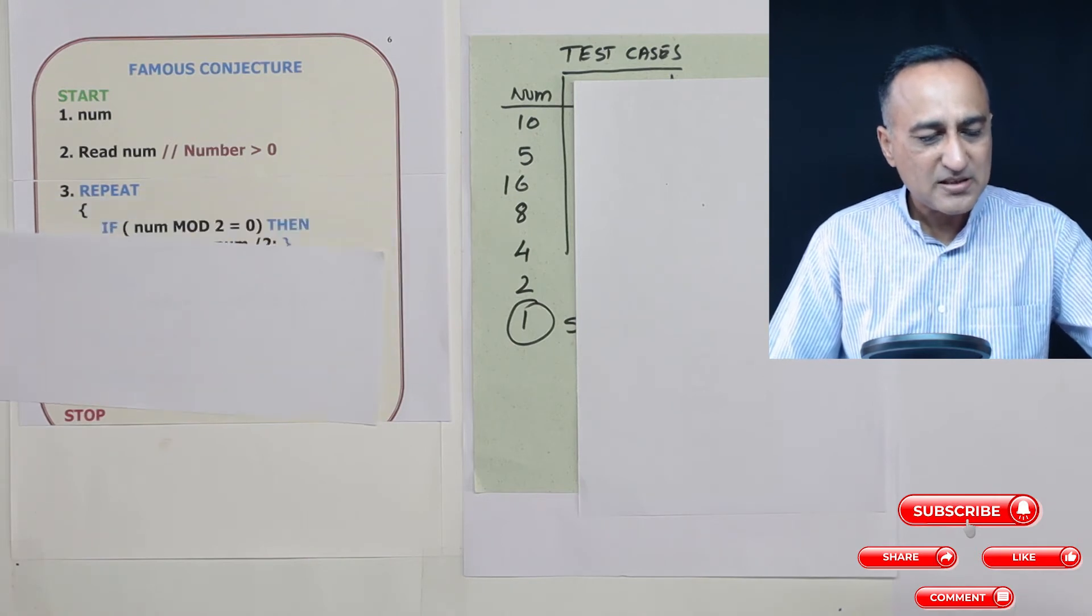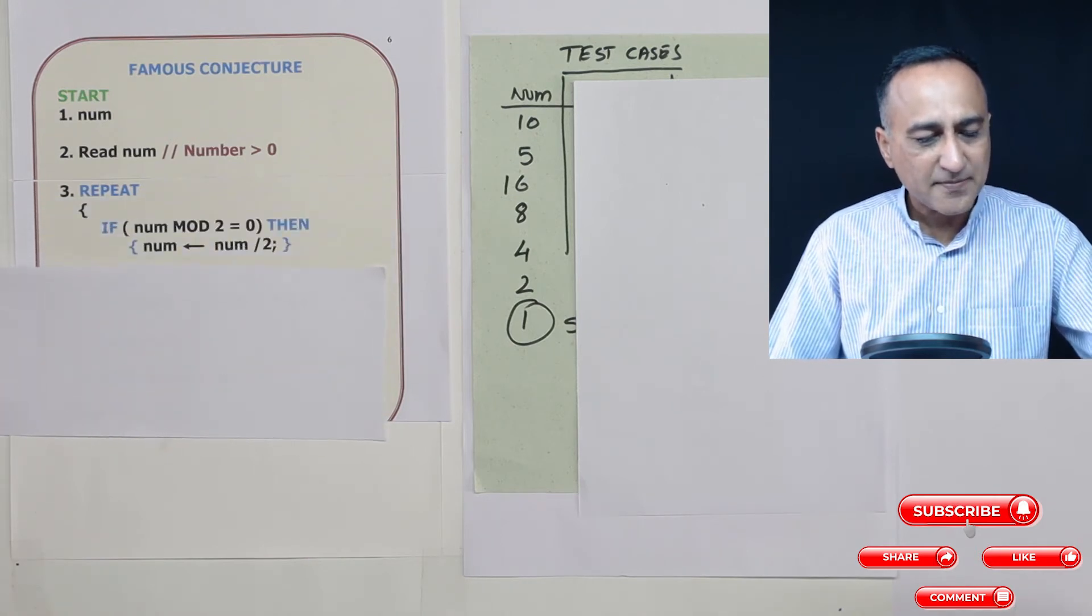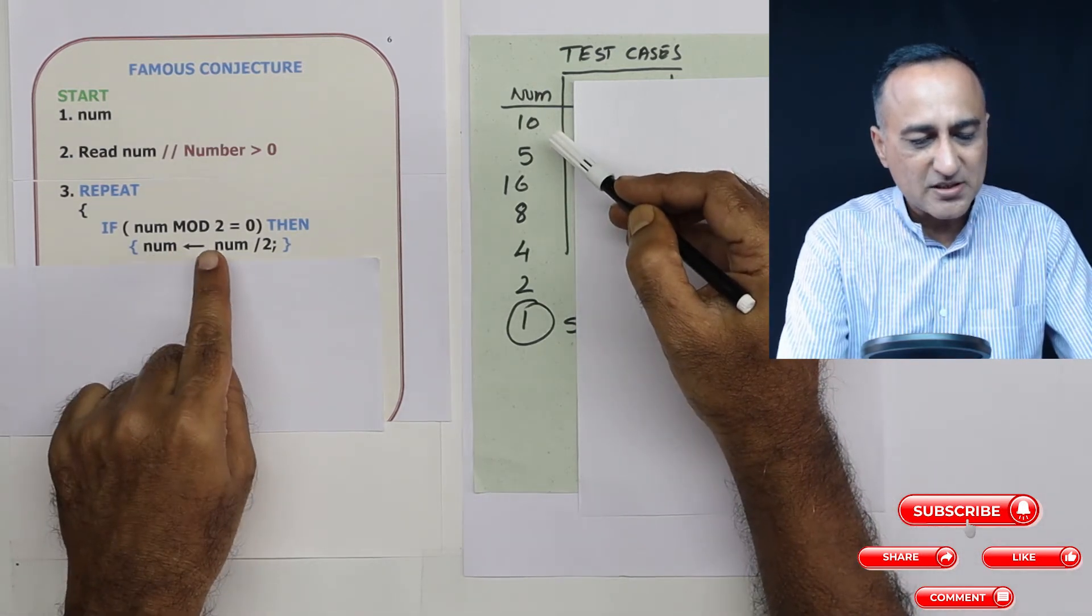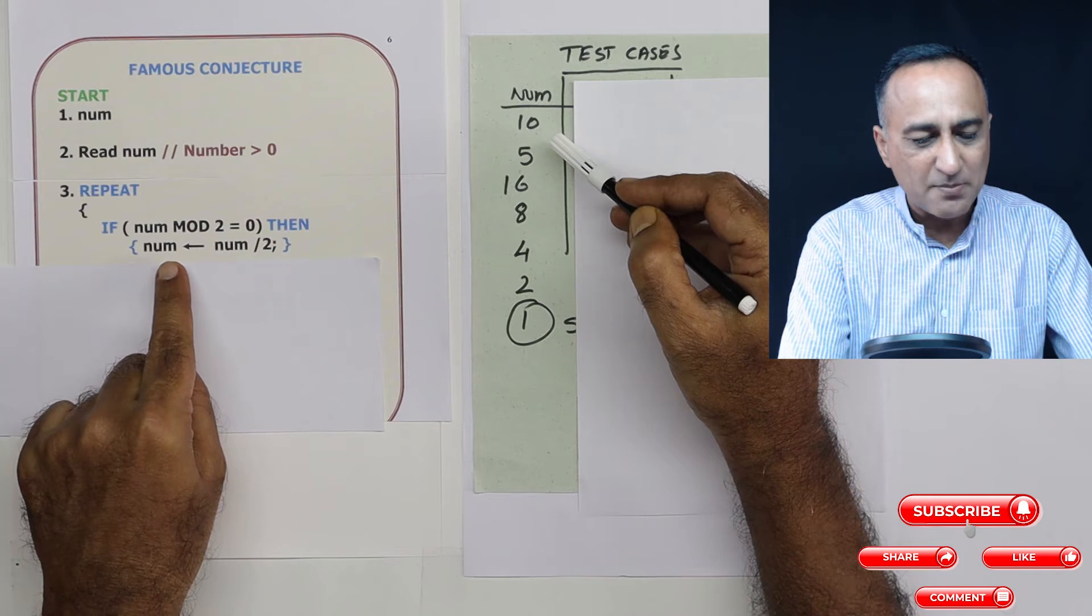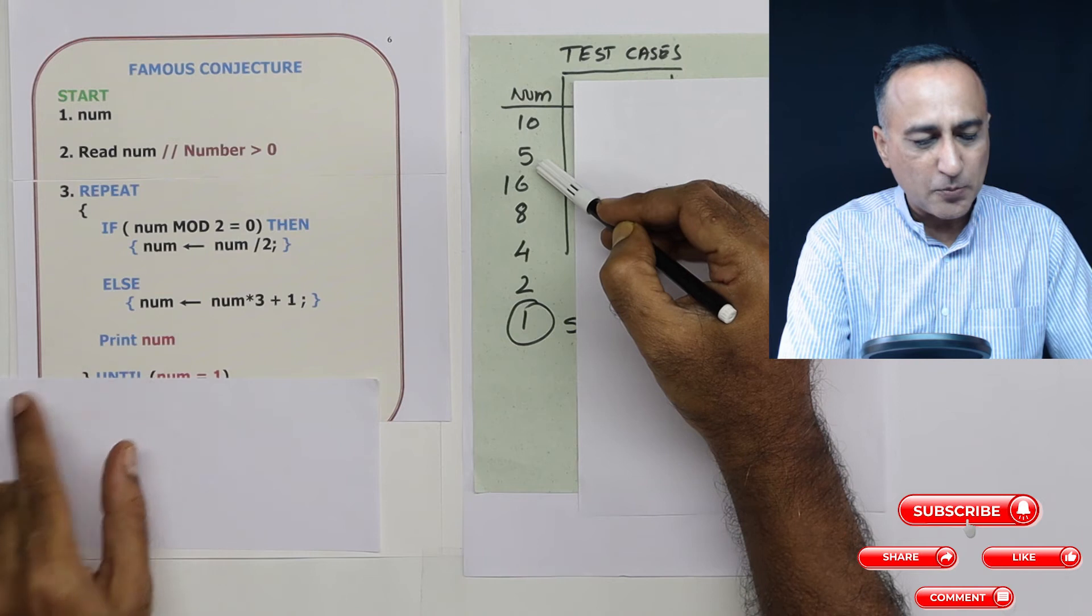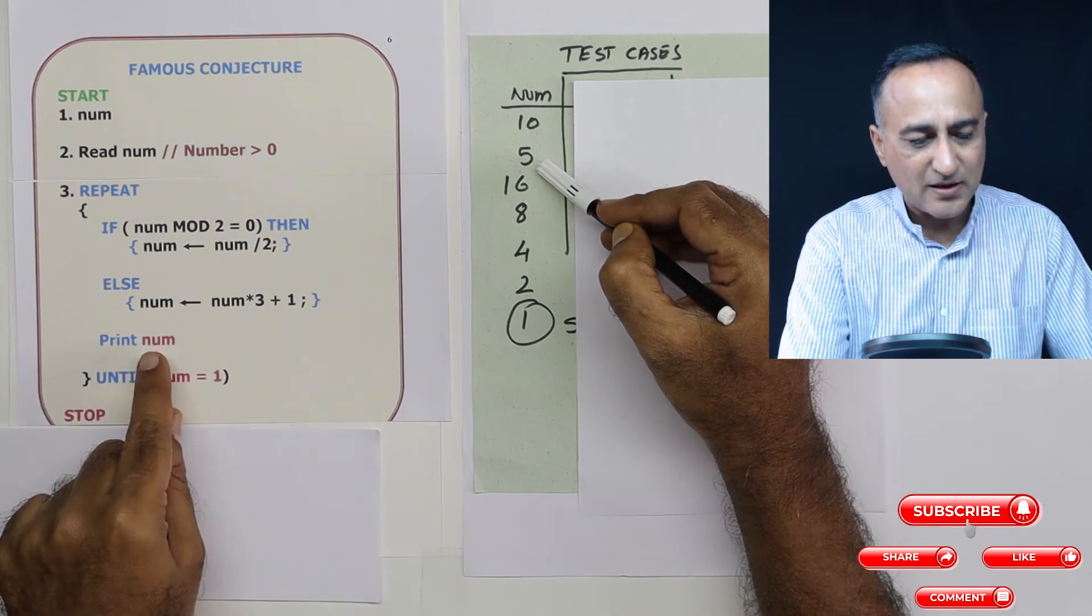So next step what happens is I am checking if the number 10, for example, n mod 2 is 0. Then what I am going to do is I am going to make number equal to 5. So I am going to print the number as 5.